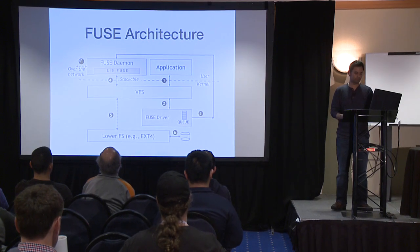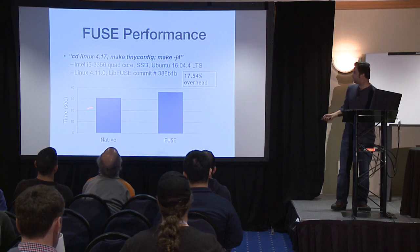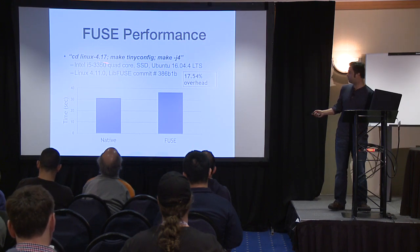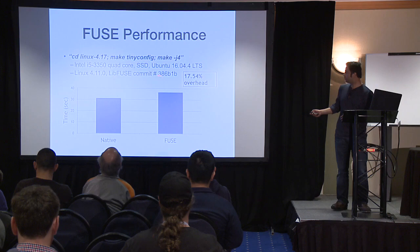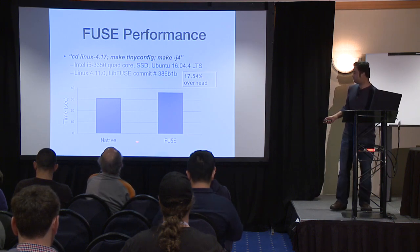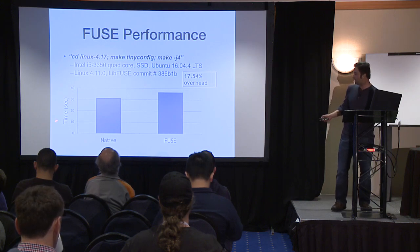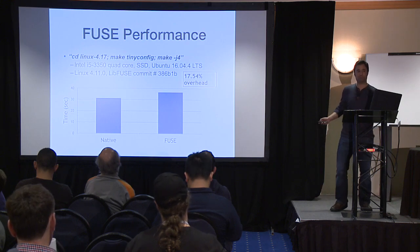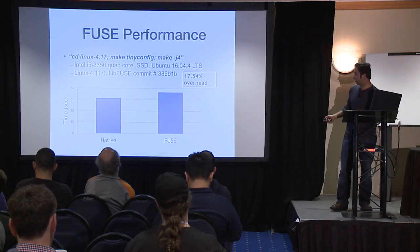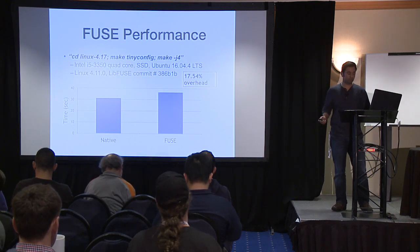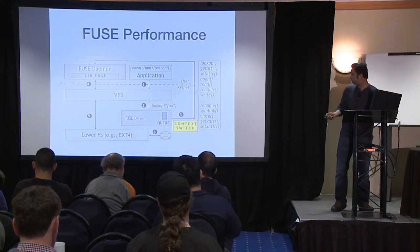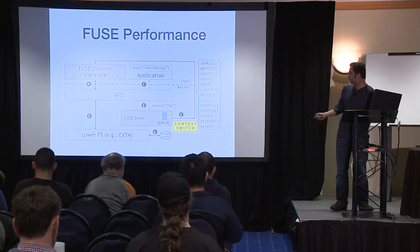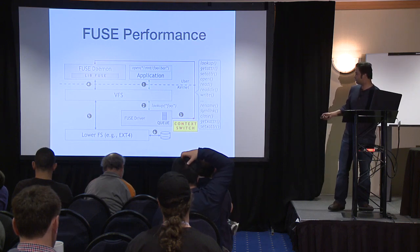Let's look at the performance of Fuse. The benchmark I'm using is the Linux compilation benchmark — compiling Linux 4.17 on a quad-core Intel machine with SSD. The x-axis compares native ext4 and Fuse performance, and the y-axis shows build time in seconds. As seen, there is about 17.54% overhead with Fuse. So let's understand why. The main cause of performance overhead in Fuse is the context switch that occurs for every request.